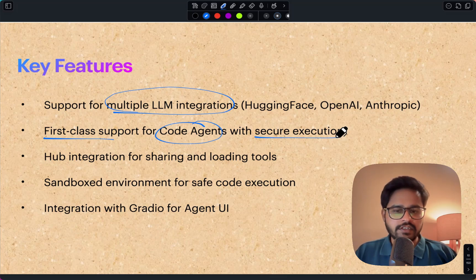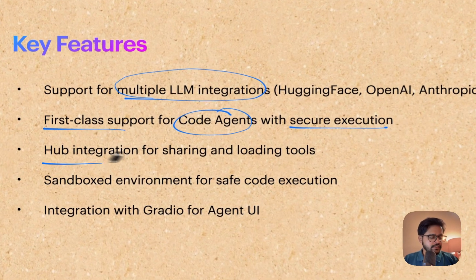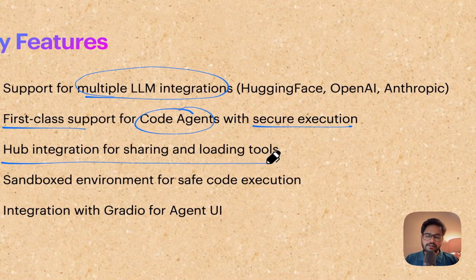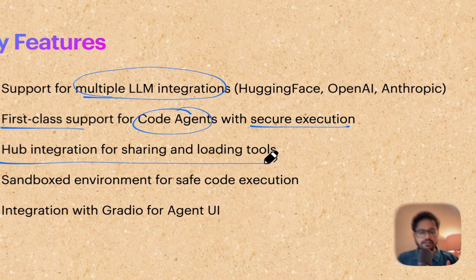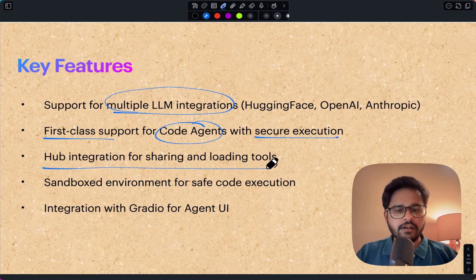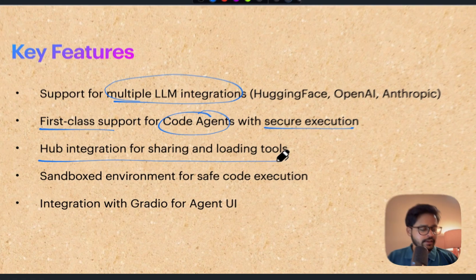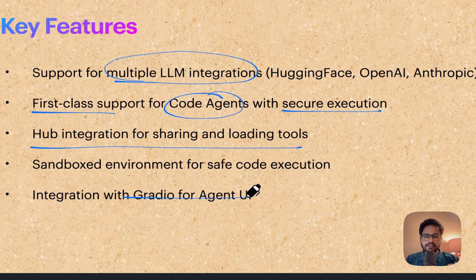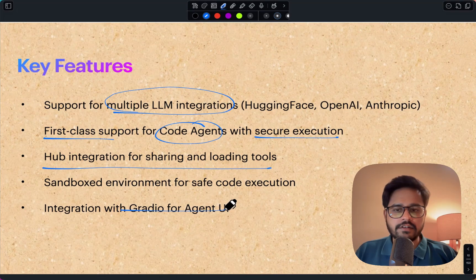Another interesting thing about this library is that it is very well integrated with Hugging Face Hub, so you can load any spaces and use them as tools, or you can directly link it with Gradio as well. There are a bunch of different features that make the creation of AI agents very easy.